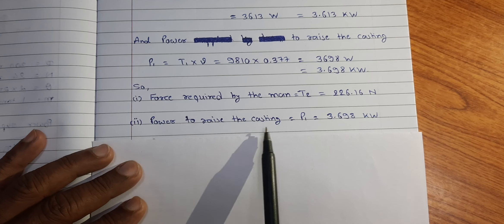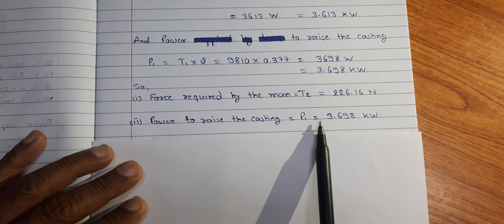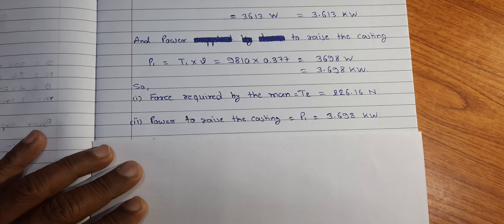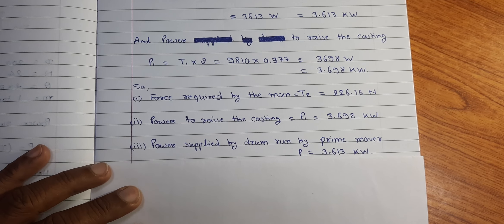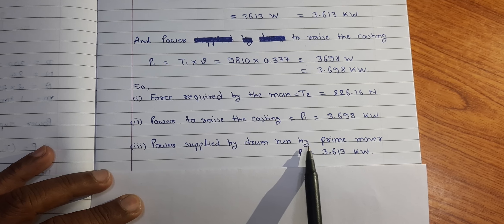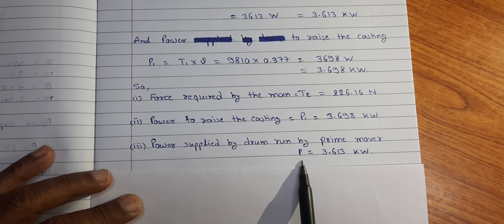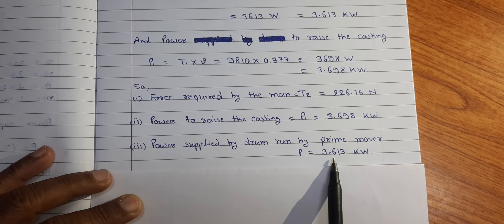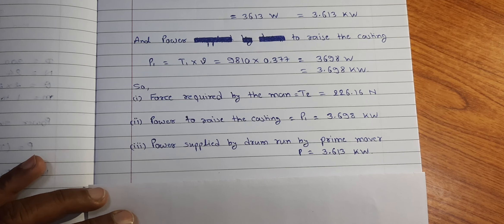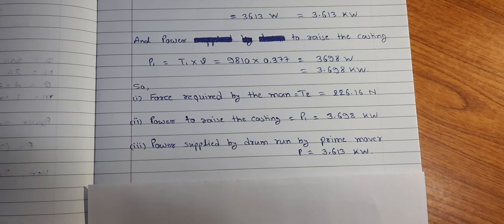Power to raise the casting P1 is equal to 3.698 KW. And third, power supplied by drum run by prime mover P is equal to 3.613 KW. So, this ends the problem. Thank you very much.